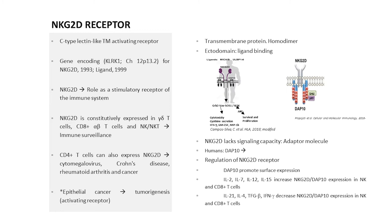As you know, the NKG2D receptor is an activating receptor, a C-type lectin receptor, that has two parts. It is a protein with an ectodomain and a transmembrane region, and it also has an intramembrane connection with an adaptor molecule — called an adaptor in both mice and humans. What is remarkable about this receptor is that it is constitutively expressed on some effector cells, such as NK cells, but also some T cells, including gamma-delta T cells, CD8 T cells, and some NKT cells.